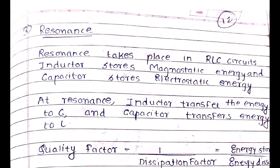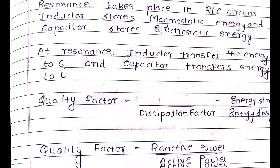At resonance, the inductor that stores magnetostatic energy transfers the energy to the capacitor, and the capacitor transfers the energy back to the inductor. So resonance takes place in an RLC circuit: the inductor stores magnetostatic energy, the capacitor stores electrostatic energy, and at resonance the transfer of energy takes place from L to C and C to L.